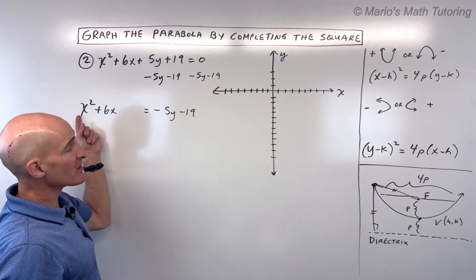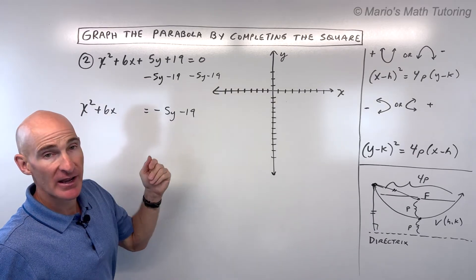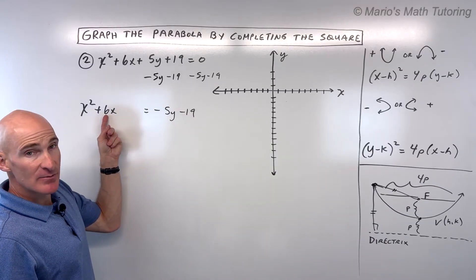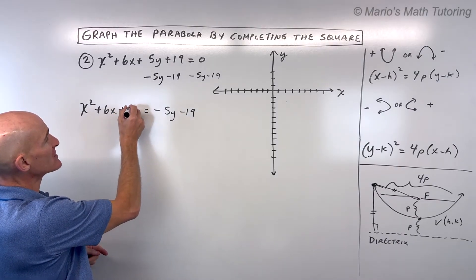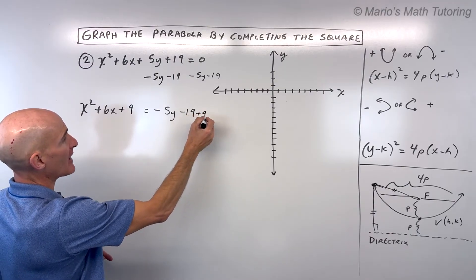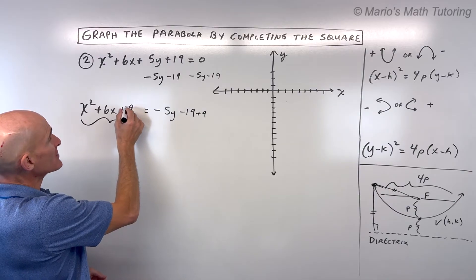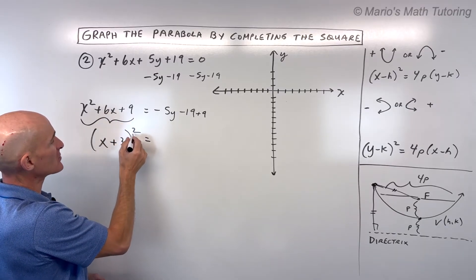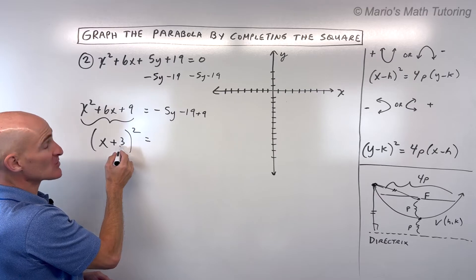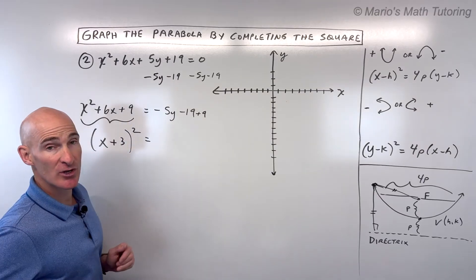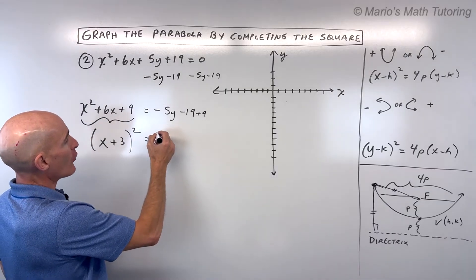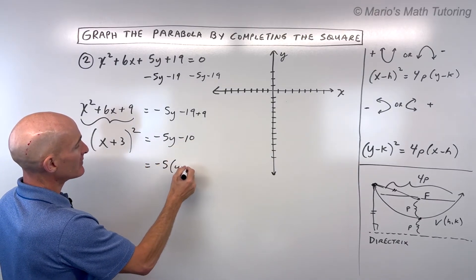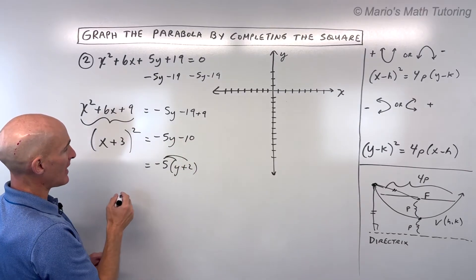If there were a coefficient in front of x², like a 2 or 3, we'd divide everything by that number first. Now we take half of the b value and square it: half of 6 is 3, and 3² = 9. Adding 9 to both sides gives (x + 3)² on the left. On the right we have −5y − 10, and factoring out −5 gives −5(y + 2). You can check by distributing.